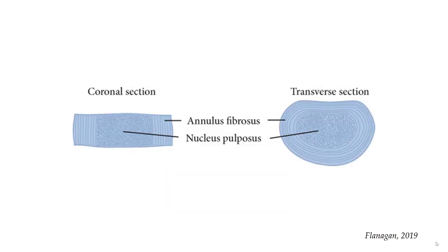Let's take a look at the disc a little more closely. The disc is made up of two parts. The outer section is called the annulus fibrosis and it provides structure to the disc. The nucleus pulposus is like jelly inside a jelly donut. It serves the same function as putting air in your tires, pressurizing the disc and allowing the vertebral bodies to move without impinging on one another.